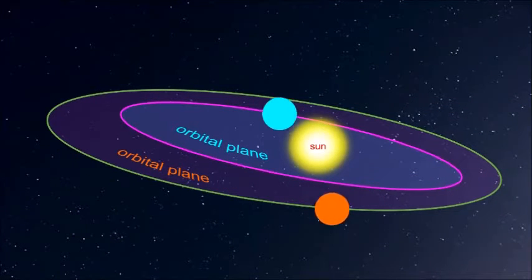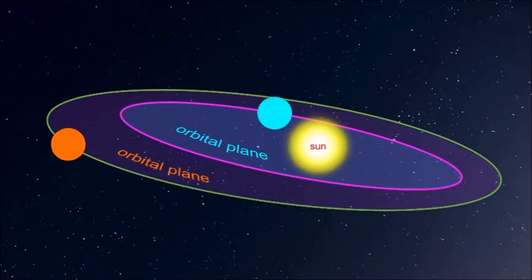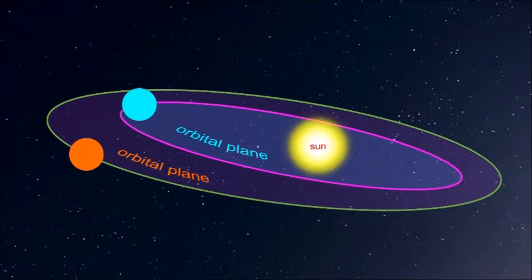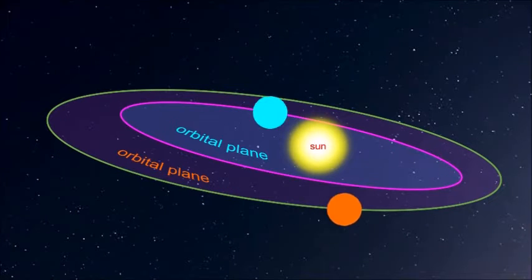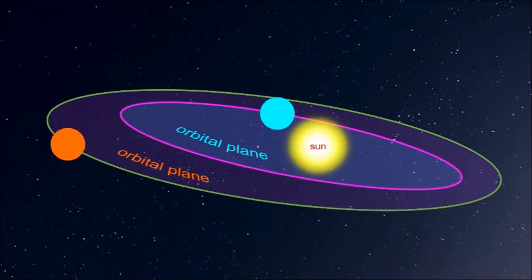Here you see the planets in a solar system orbiting the sun and the corresponding orbital planes containing their orbits.